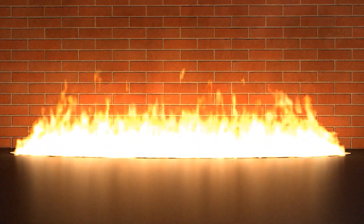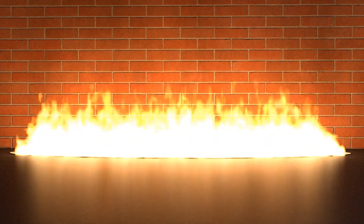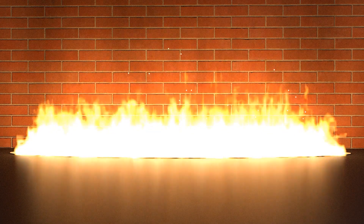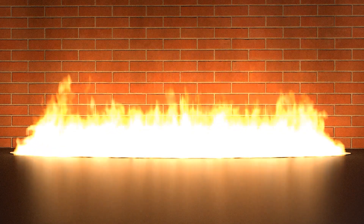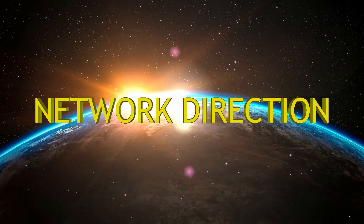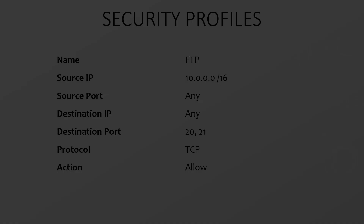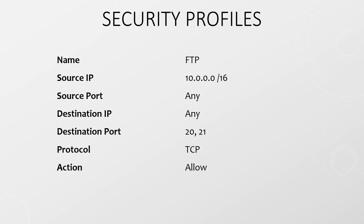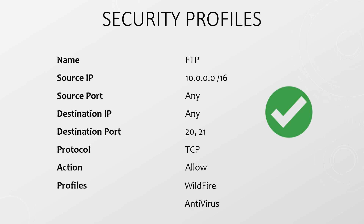Next-generation firewalls are more than just a list of access control entries. They look deeper into traffic to find additional threats. On a Palo Alto firewall, a key component to this is the security profile. We use a security profile to match traffic based on conditions like source, destination, user, application, and so on. If the conditions match and the action allows traffic, then we can apply a security policy. This looks for additional threats within this traffic, including viruses, malware, vulnerabilities, risky file types, and DOS attacks.